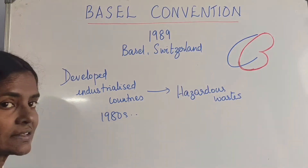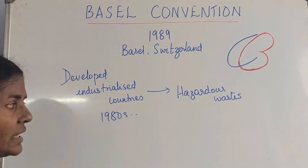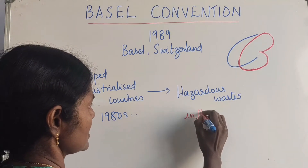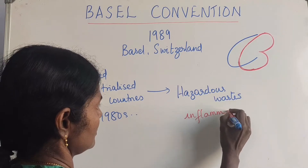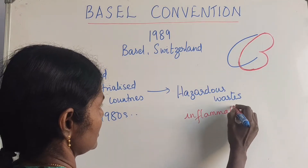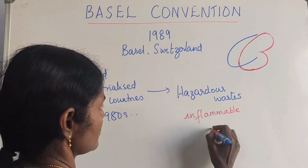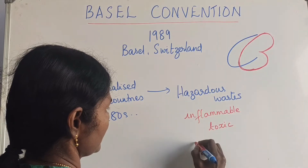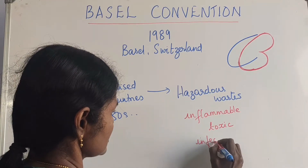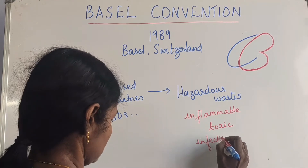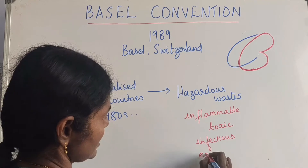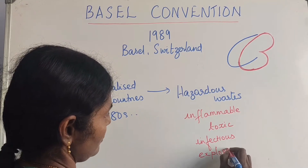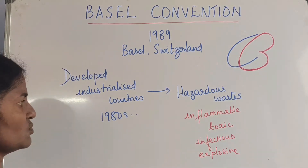Now, what is hazardous waste? Anything that is dangerous — say anything that is inflammable, anything that is toxic, anything that is infectious, anything that is explosive — all these come under hazardous waste.